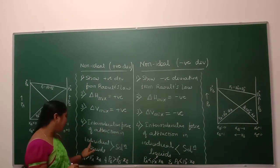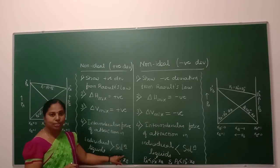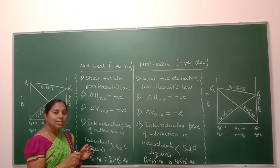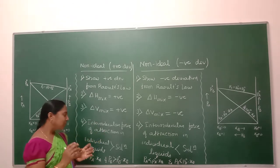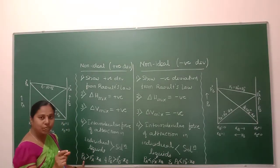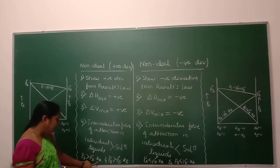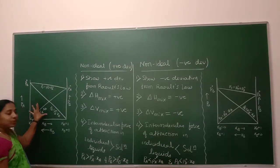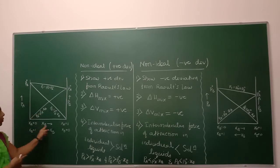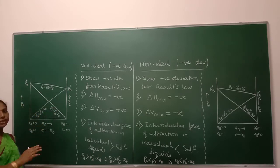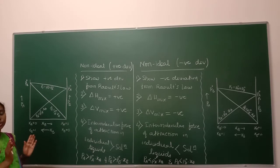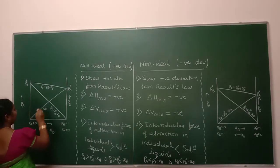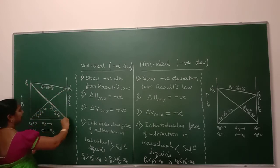That is, the intermolecular force of attraction in individual liquids is greater than in the solution. In case of solution, the particles are held together by weak force, so those particles are trying to escape out of the solution. As a result, the pressure gets increased compared to the pressure obtained from Raoult's law. If we draw a graph of vapor pressure along the Y-axis and mole fraction along the X-axis, for an ideal solution we get a straight line which does not deviate from Raoult's law.